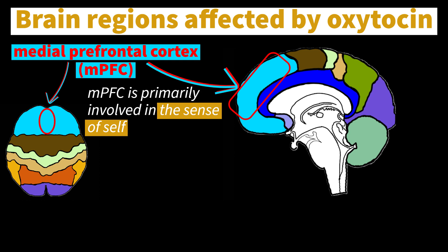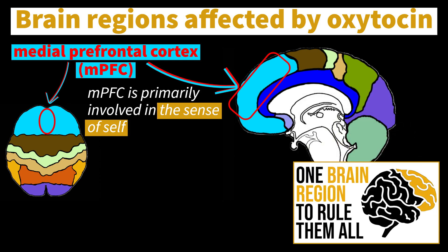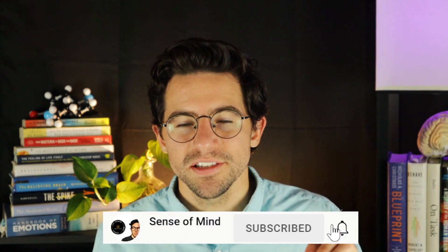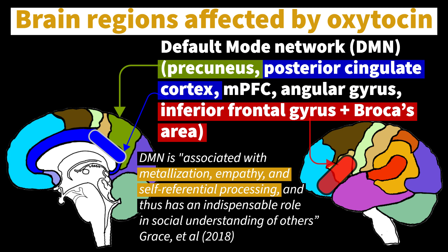Accordingly, the authors observed increased activation during interpersonal tasks of the medial prefrontal cortex, which activates whenever we think about ourselves. The single most consistently activated region was the superior temporal gyrus, which is particularly important because it is involved in processing of social stimuli, possibly by helping the brain to recognize emotional facial expressions in other people. These authors believe that the STG drives the increase in cognitive empathy commonly seen with oxytocin administration.